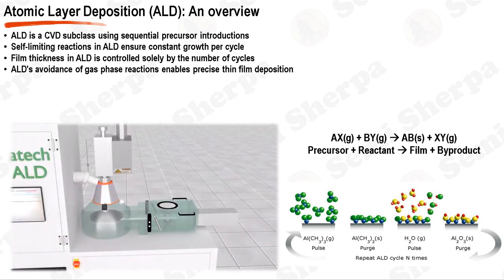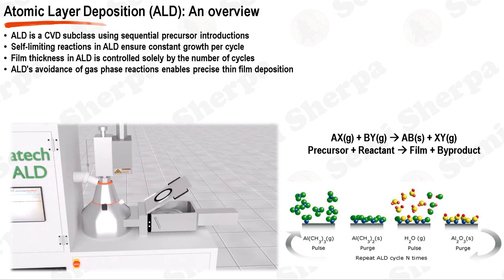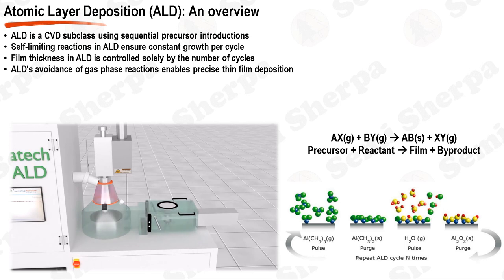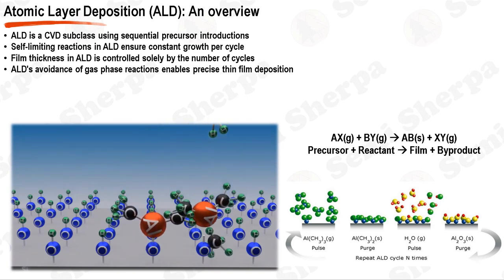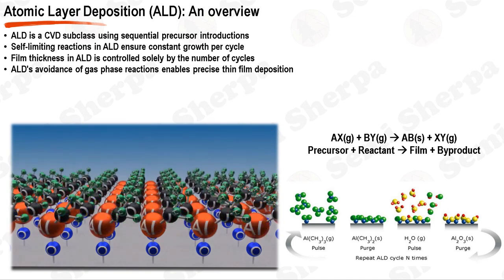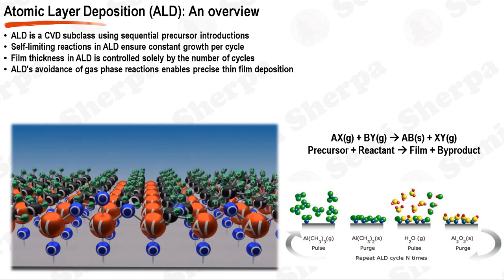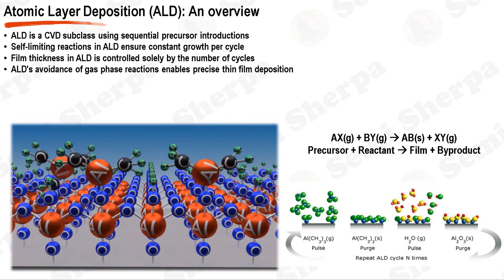The chamber is then purged again with an inert gas to remove unreacted water and reaction byproducts. This completes one ALD cycle and results in the deposition of one atomic layer of Al2O3. The film thickness in ALD is controlled precisely by the number of cycles. Due to the self-limiting nature of the reactions, excellent uniformity and conformity can be achieved, even on complex 3D structures. Furthermore, as the reactions are surface-controlled, there are no gas phase reactions, reducing the risk of particle contamination.